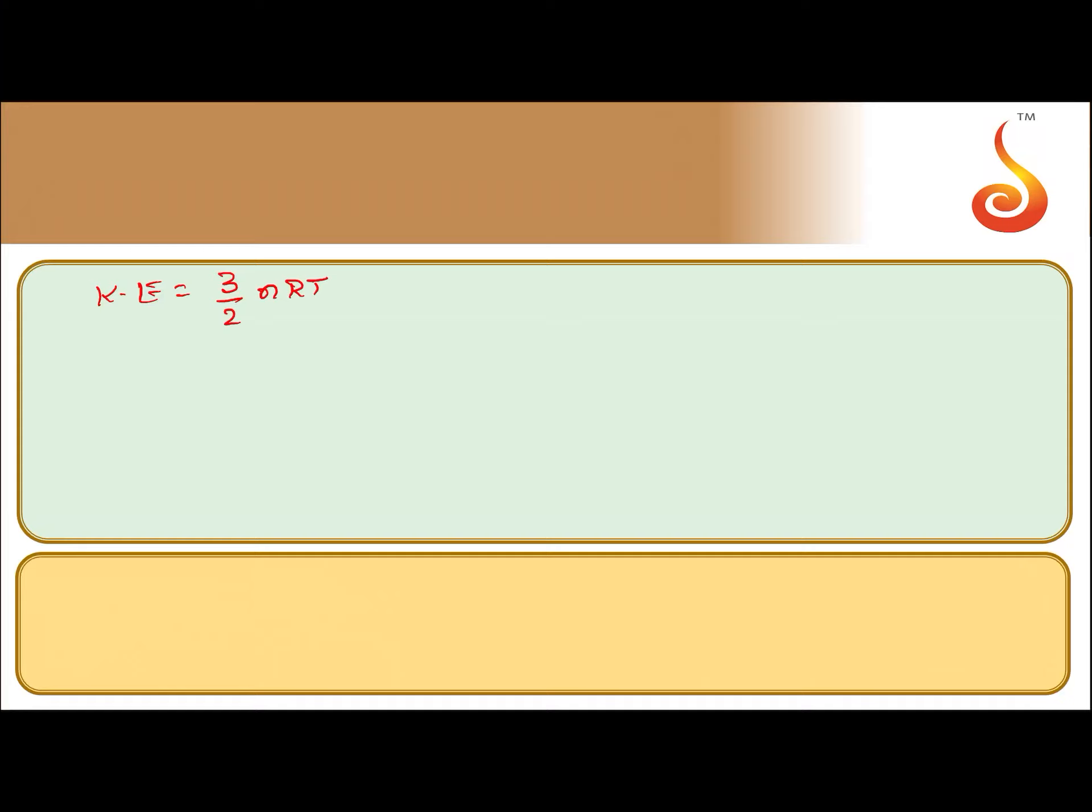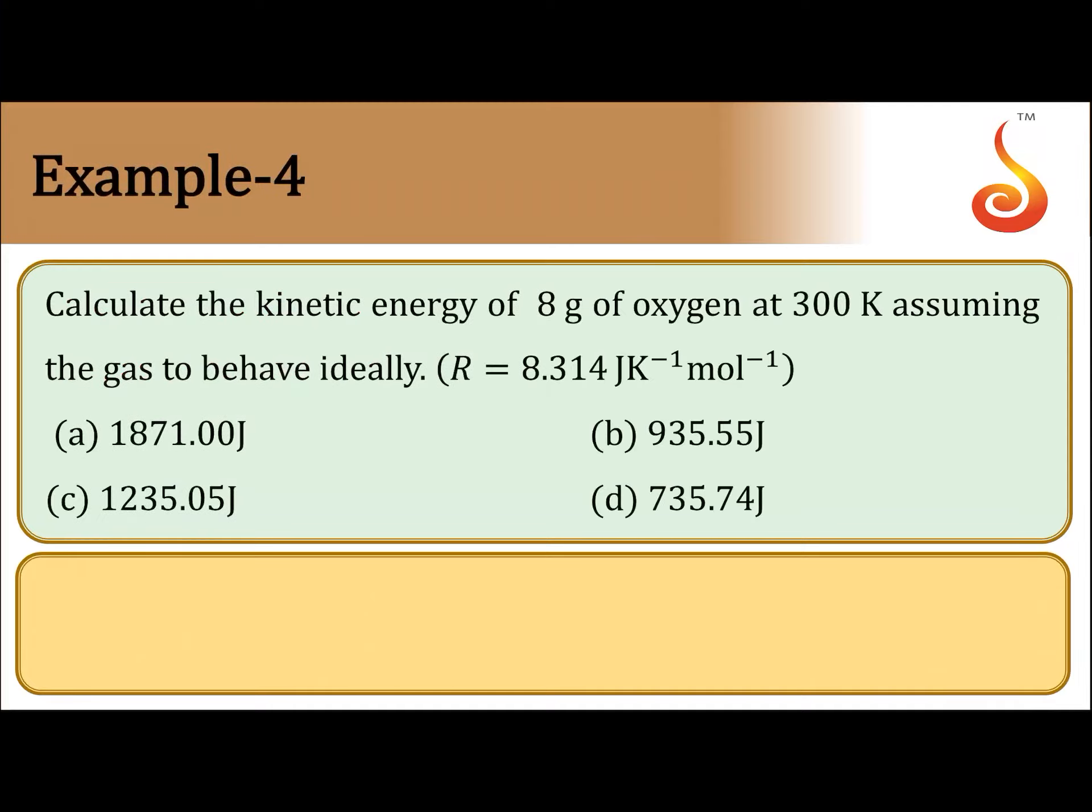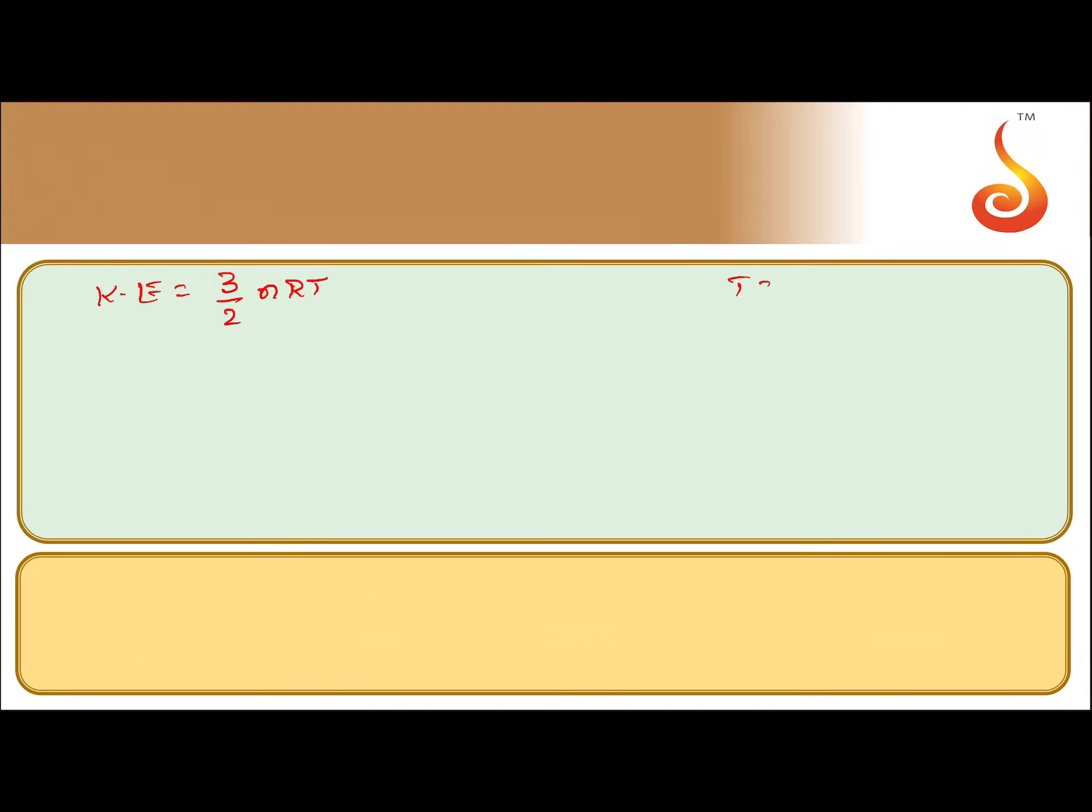What is the temperature given? Temperature is 300 Kelvin and R is 8.314 joule per Kelvin per mole. So R value is given, temperature is given.